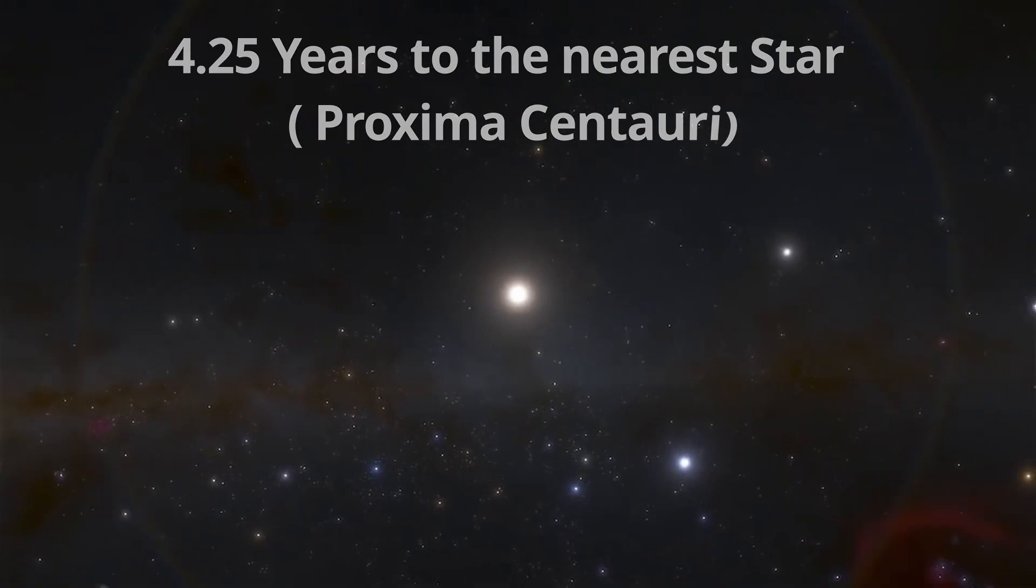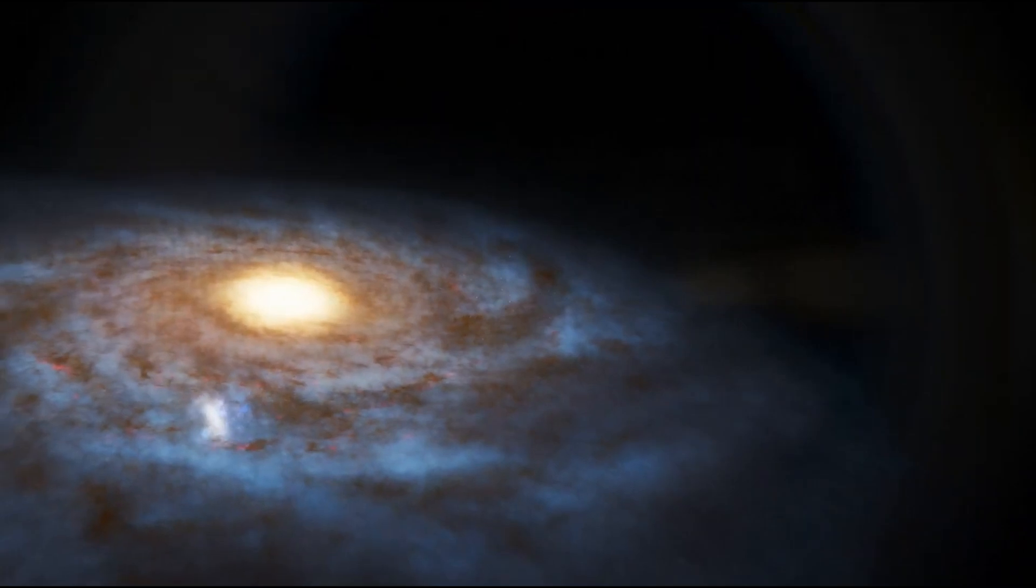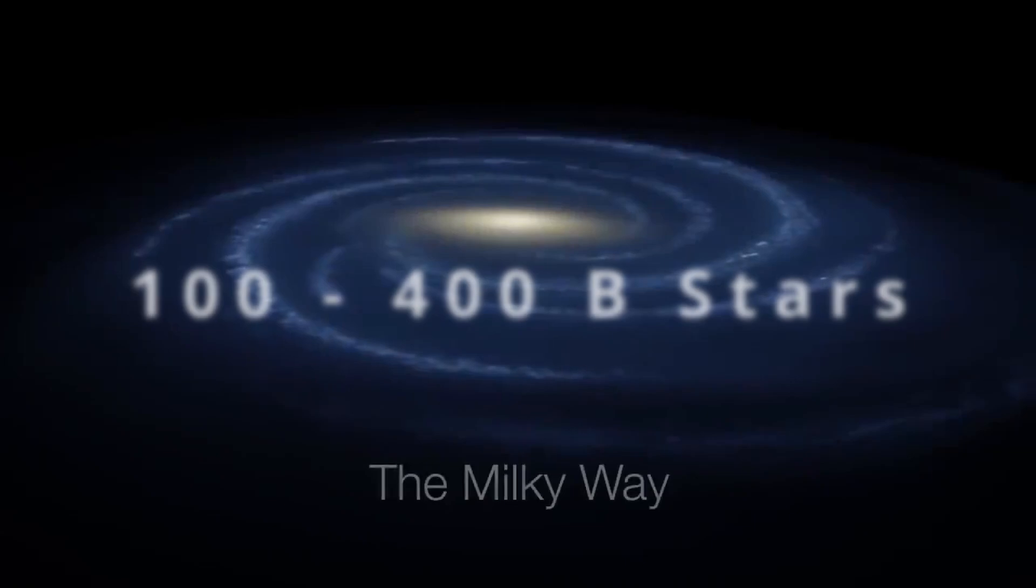Our galaxy is a gravitationally bound collection of stars swirling in a spiral through space. It probably contains 100 to 400 billion stars and is about 100,000 light years across.